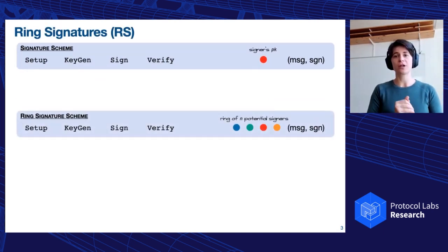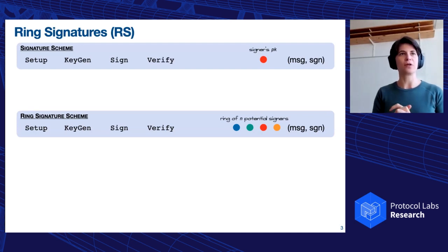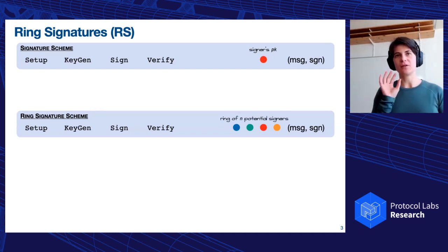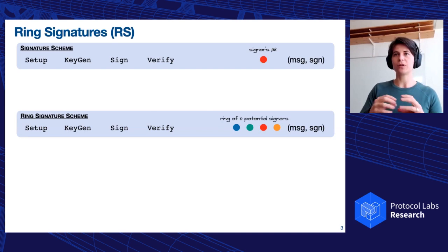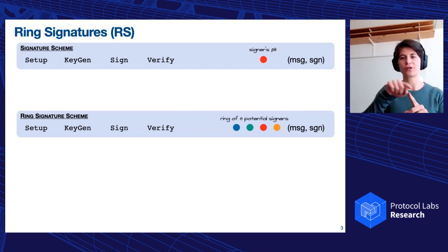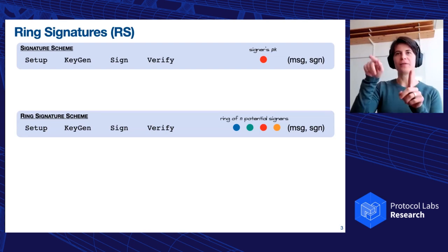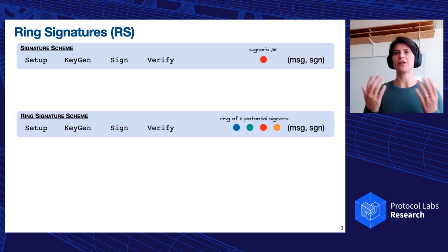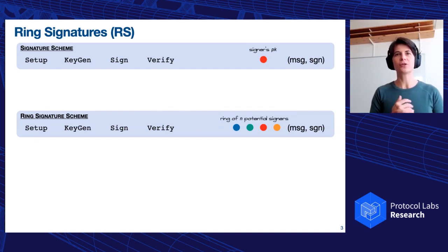In 2001, Rivest, Shamir, and Tauman have proposed the notion of ring signature. So the algorithms are exactly the same, except that the verification procedure, instead of taking one single public key as input, it will take a ring, a group of public keys. It's called a ring just for historical reasons that the first construction was constructed around a shape that looks like a ring. But essentially, I will have like a set of n potential signers. And what the signature is telling me is proving that one of the signers has signed this message, but produced the signature, but it doesn't tell me which of those signers is doing so.